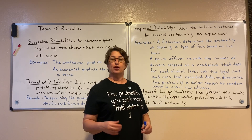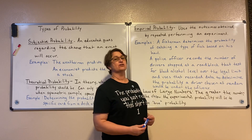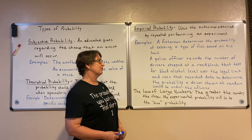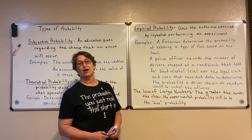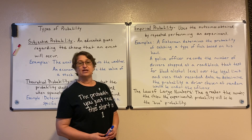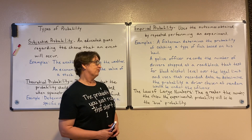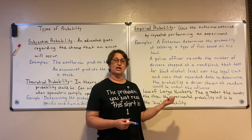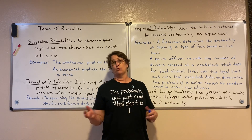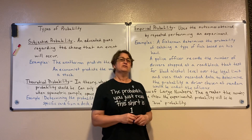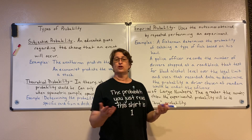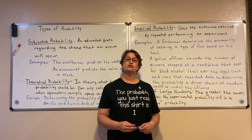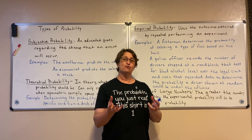We call that empirical probability — when you run the experiment and look at your data to figure out the probability. Another example: a police officer records the number of drivers stopped at a roadblock and the number that tested positive for blood alcohol level over the legal limit. If 100 drivers came through and four tested over the legal limit, the officer might say 4% of drivers tested positive, so the probability that a randomly chosen driver is over the legal limit is 4%.